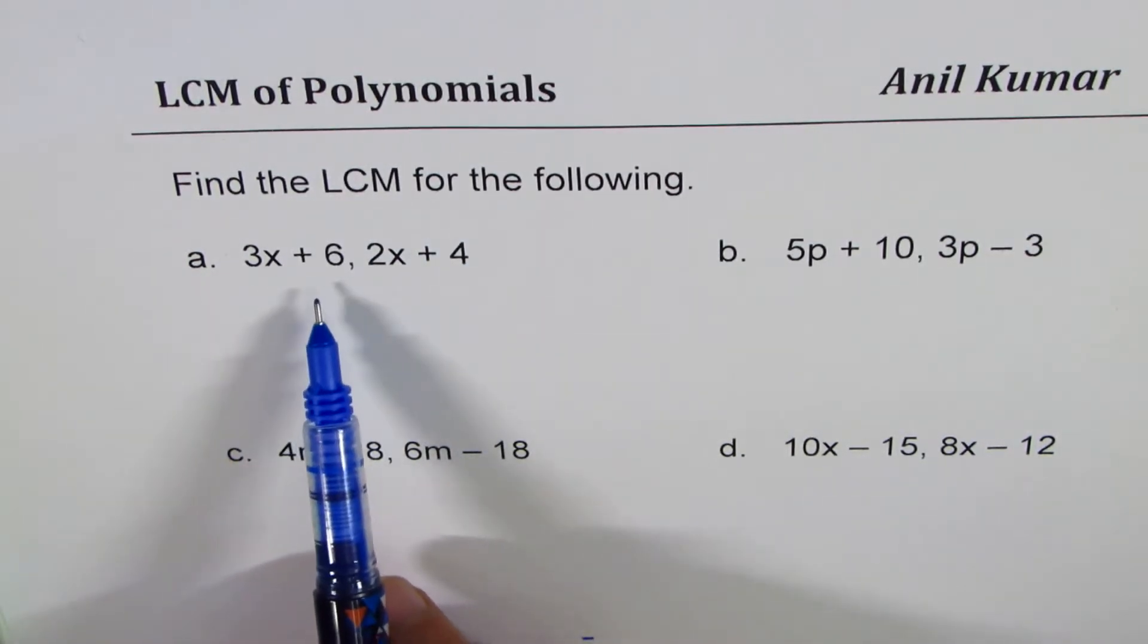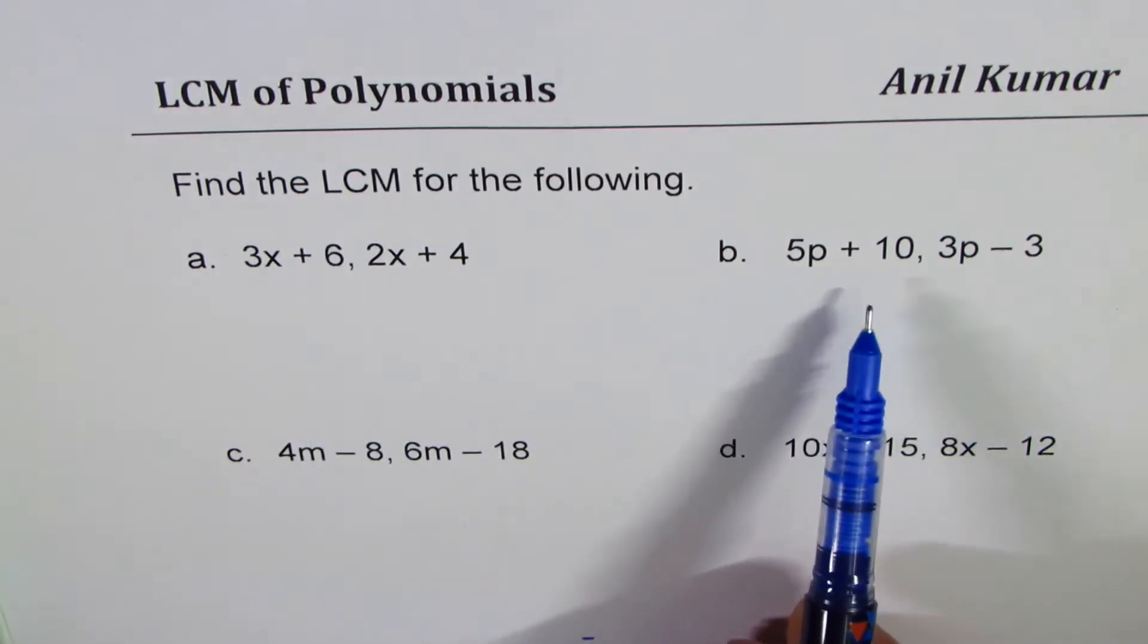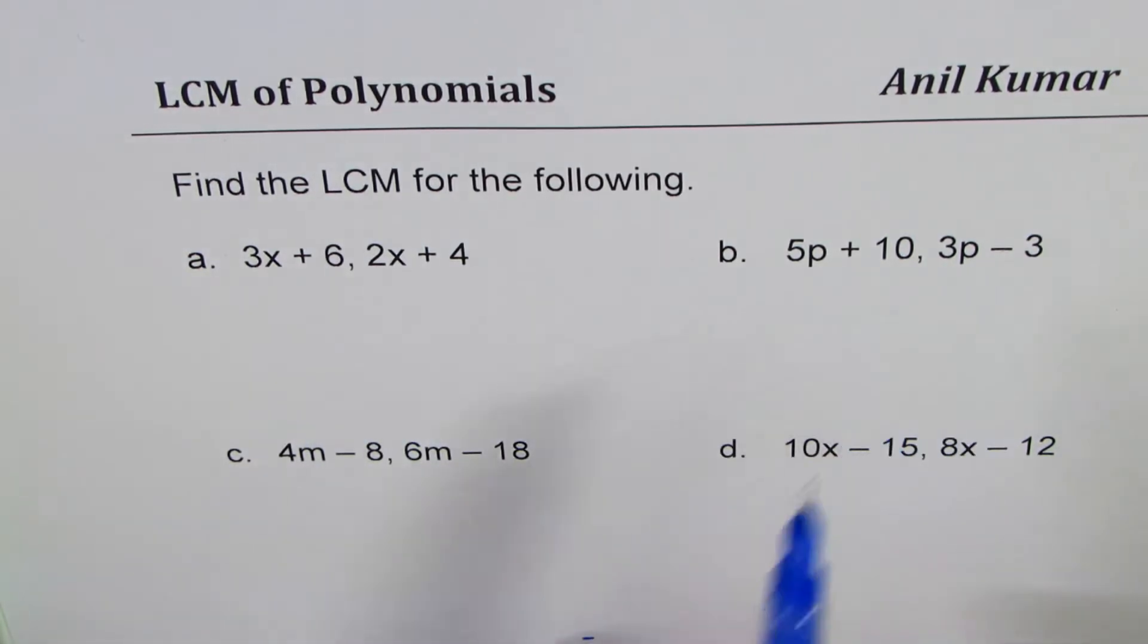Find the LCM for the following: 3x plus 6 and 2x plus 4; 5p plus 10, 3p minus 3; 4m minus 8, 6m minus 18; 10x minus 15, 8x minus 12.